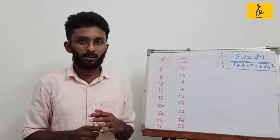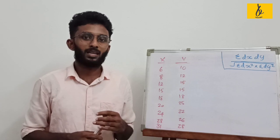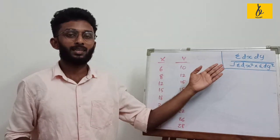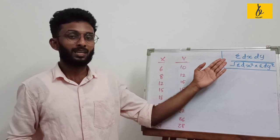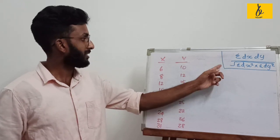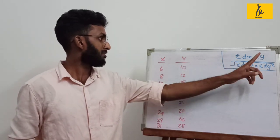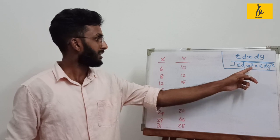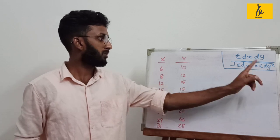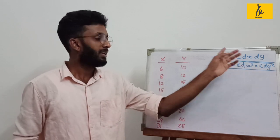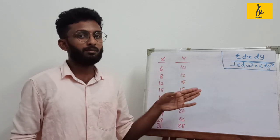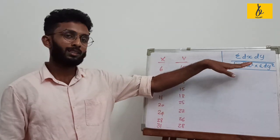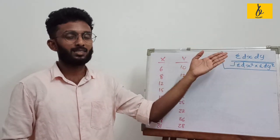We have an example. This is the method. The direct method is deviation from its mean. We have this equation: summation dx·dy divided by square root of summation dx squared times summation dy squared. We will call dx and dy.